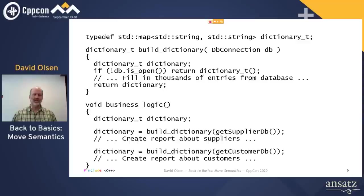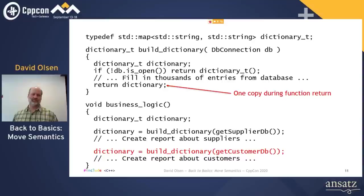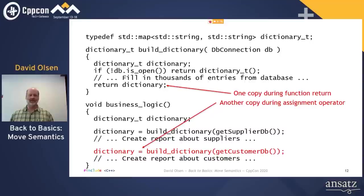Your program works great. The C++ standard library is really useful. But then an important user with lots of data complains that it is too slow, and you need to figure out why. The slowness comes from the two lines of code where a dictionary is returned from a function and assigned to a variable. A copy of the dictionary is made while returning it from the function, and then another copy is made while assigning it to the dictionary variable. That's two copies of this map with thousands of entries, which slows things down and doesn't seem necessary.